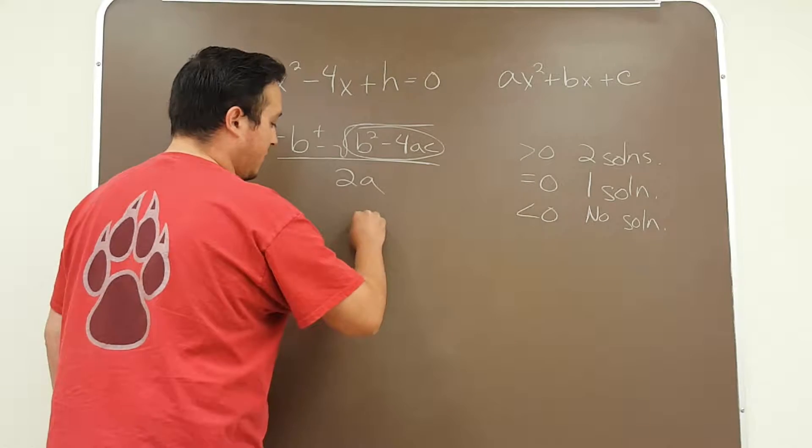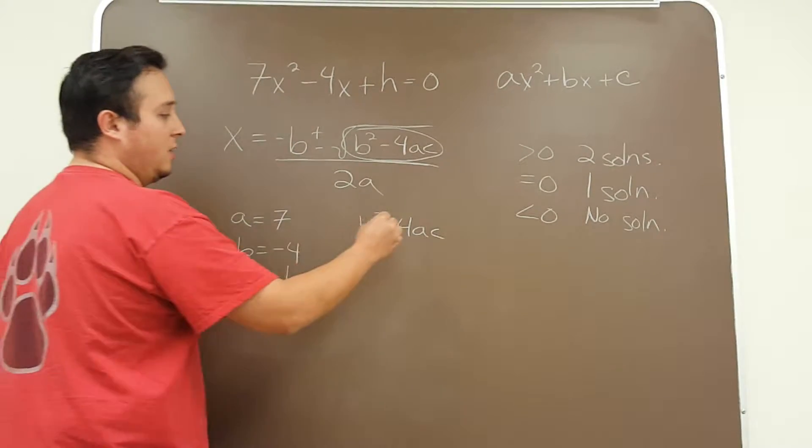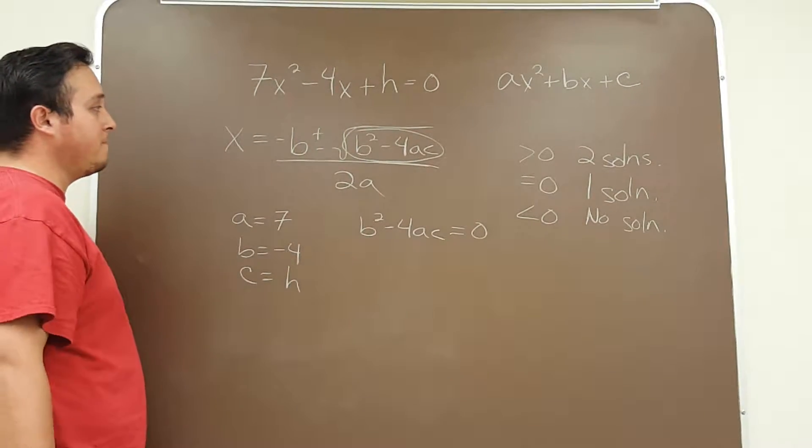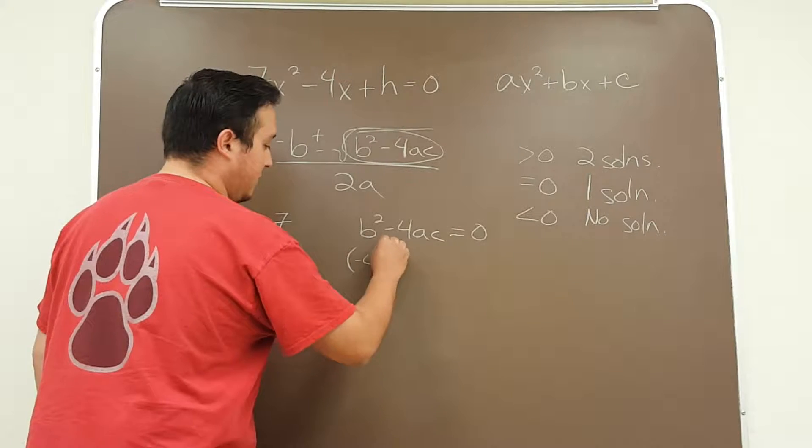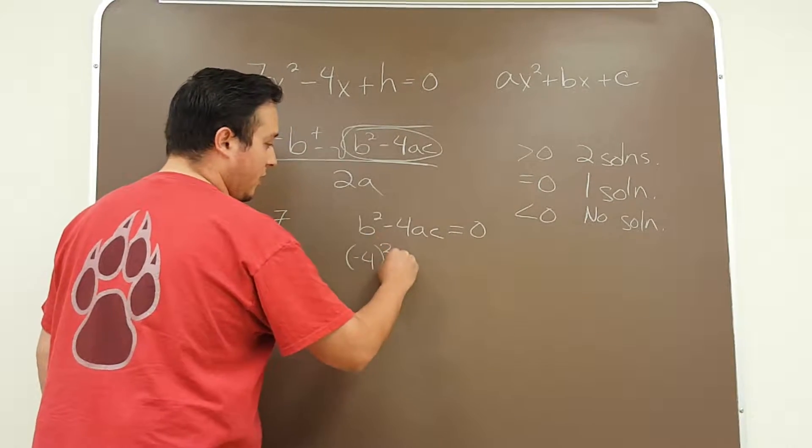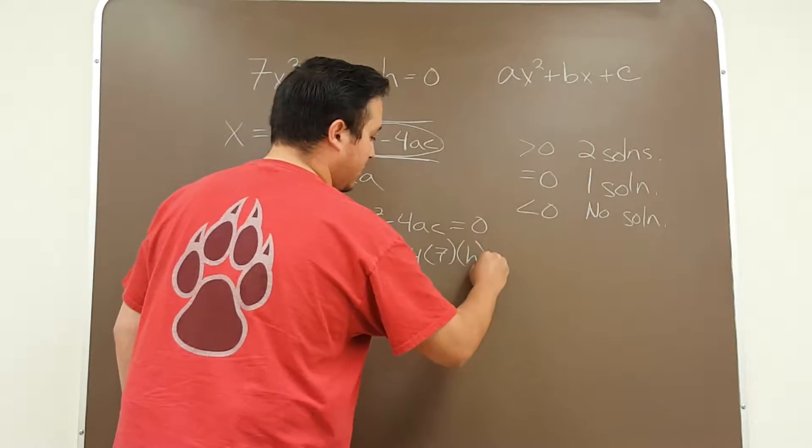So our discriminant is b squared minus 4ac. Again we're setting it equal to 0 because we only want to find one solution. So plugging in our a, b, and c we get negative 4 squared minus 4 times 7 times h is equal to 0.